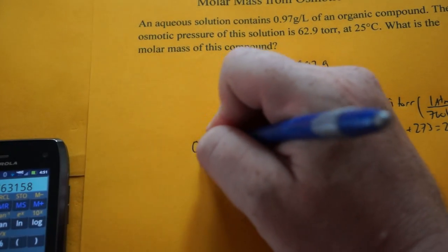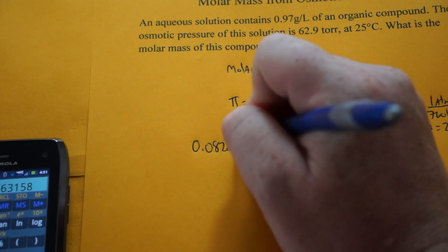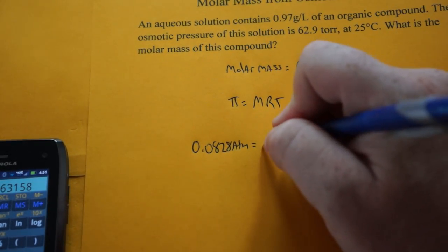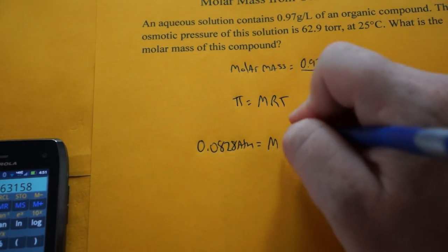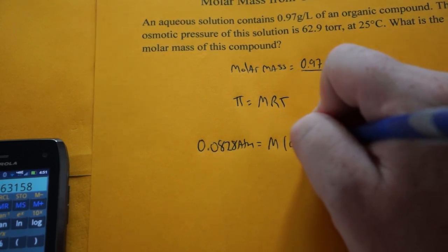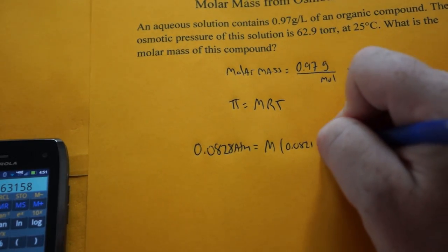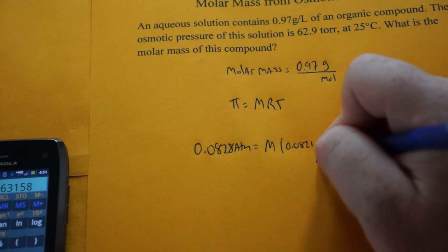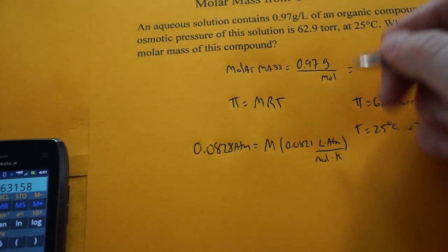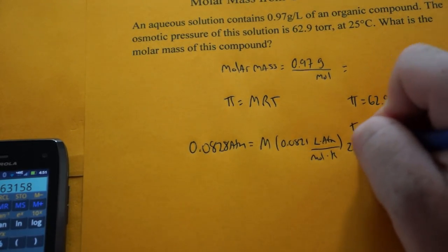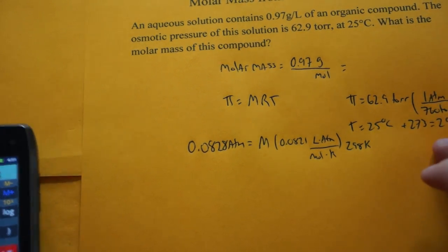So that's going to go over here. 0.0828 atmospheres is equal to our molarity. That's where our moles is located. R is 0.0821 liter atmospheres per mole Kelvin and T is 298 Kelvin. So let's just solve for molarity.